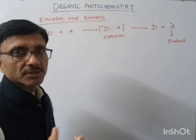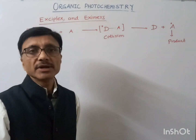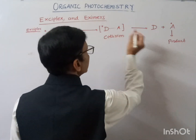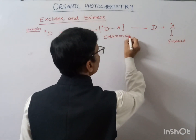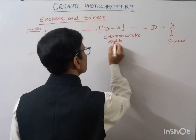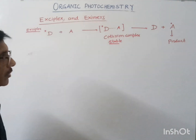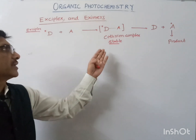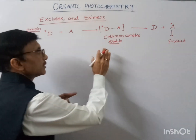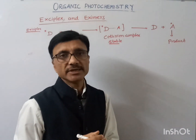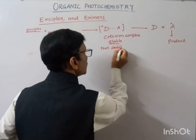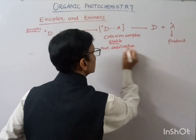In the case of exciplex, the acceptor molecule takes energy from a different donor molecule, and during that interaction a collision complex is formed. This collision complex is quite stable. Its stability can be shown with the help of molecular orbital concept — the net stabilization energy in this case comes out to be negative.